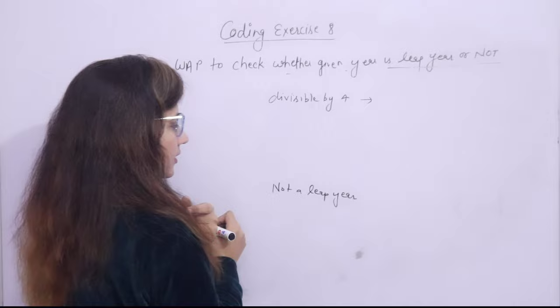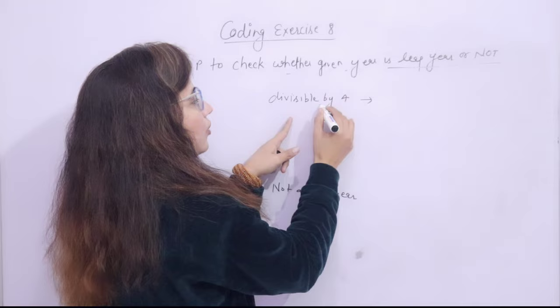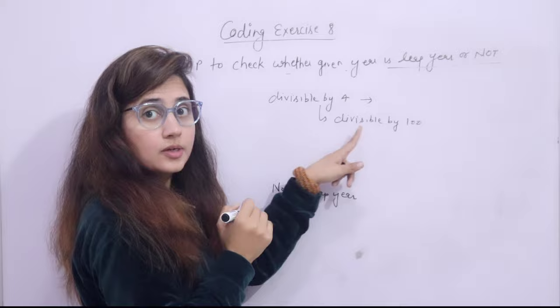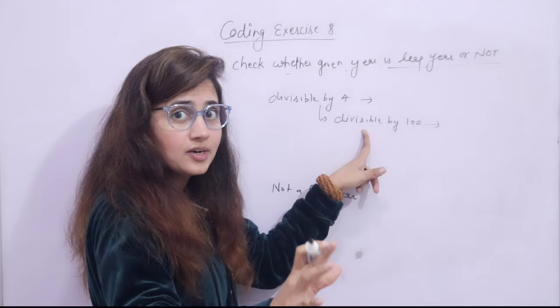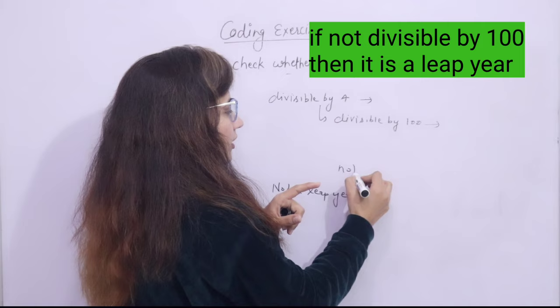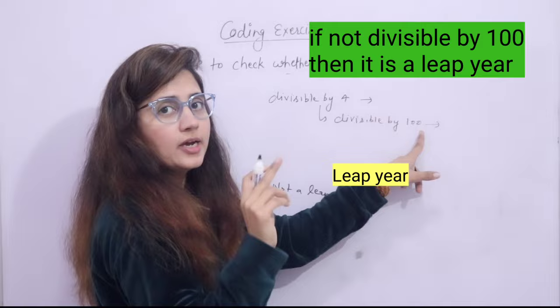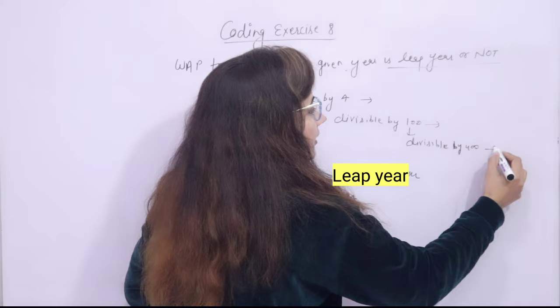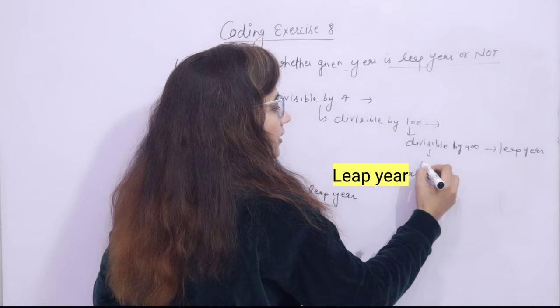If it is divisible by 4, then check if the number is divisible by 100. If yes, it may be a leap year — we can't say for sure. But if not divisible by 100, then definitely not a leap year. If it is divisible by 100, then check if it is divisible by 400. If divisible by 400, then definitely it is a leap year; if not, then not a leap year.